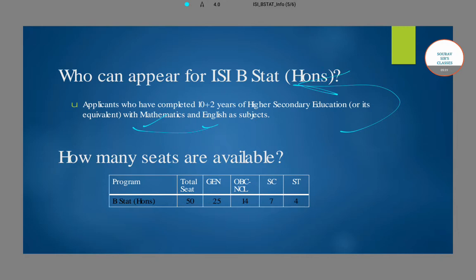Now let's look at the number of seats available for the B.Stat Honours program at ISI Kolkata. There is a total of 50 seats, of which 25 are earmarked for the general category, 14 for the OBC and CL category, 7 for SC students, and 4 seats are earmarked for students from the ST community.